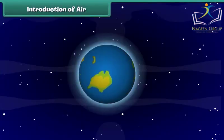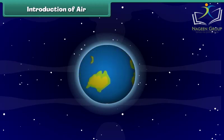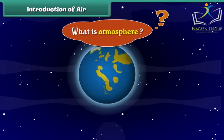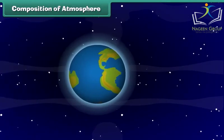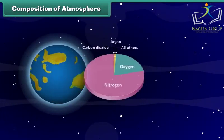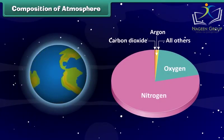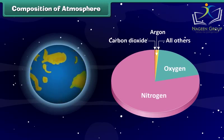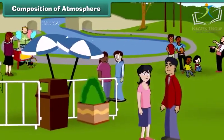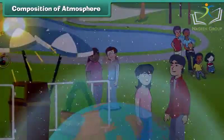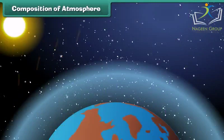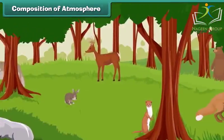Do you know the atmosphere surrounding earth is full of air? But what is this atmosphere? The atmosphere is made up of a mixture of gases, primarily nitrogen and oxygen, that wrap around the earth like a blanket. Without the atmosphere we would not be able to live here. It protects us from the dangerous rays coming from the sun and makes earth a perfect habitat for plants and animals.